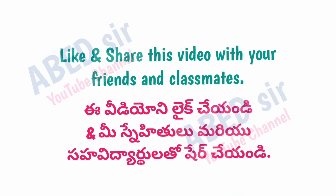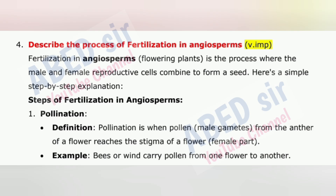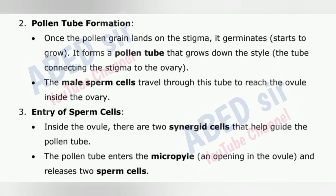Next important long question is 4: Describe the process of fertilization in angiosperms. Fertilization in angiosperms, flowering plants, is the process where the male and female reproductive cells combine to form a seed. Steps: 1. Pollination — when pollen, male gametes, from the anther reaches the stigma, the female part. Example: bees or wind carry pollen from one flower to another. 2. Pollen tube formation — once the pollen grain lands on the stigma, it germinates and forms a pollen tube that grows down the style, connecting the stigma to the ovary. The male sperm cells travel through this tube to reach the ovule inside the ovary.